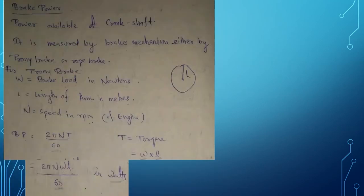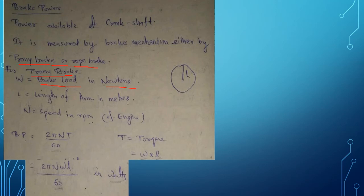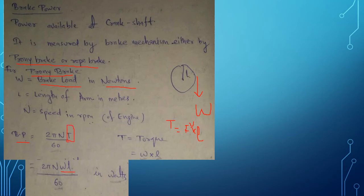Brake power can be calculated by two different methods using a dynamometer. The first type is the prony brake dynamometer. In a prony brake, we have a brake load W in Newtons and an arm length l in meters. Brake power = 2πNT / 60, where torque T = W × l (force × perpendicular distance). Substituting T = Wl gives brake power in watts.